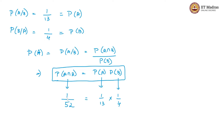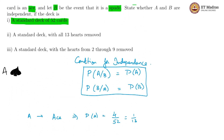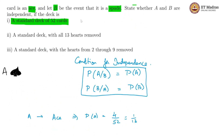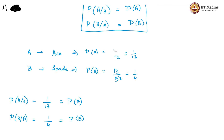Therefore, independence is satisfied. So in a standard deck, the two events are independent. Now we look at a second case: a standard deck with all the 13 hearts removed. With all the 13 hearts removed, we will have to modify these probabilities. Let us see if the conditions are still satisfied.